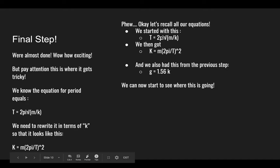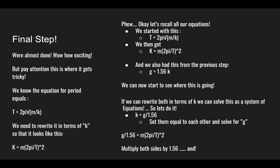Now that we got all our equations, I'm just going to restate all of them. We started with this one, the period equation. We rewrote it and we got this one, which is the constant rewritten. And then we also had this one from the previous step: g equals 1.56k. If you've been paying attention, you can see where this is going. We have two k's, we could do a system of equations and basically just eliminate k.